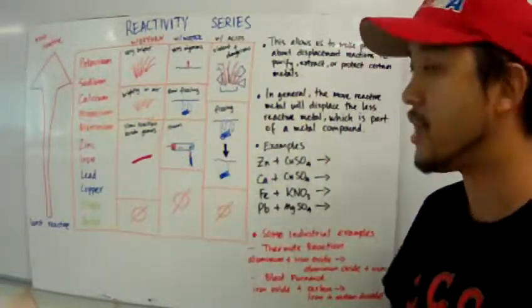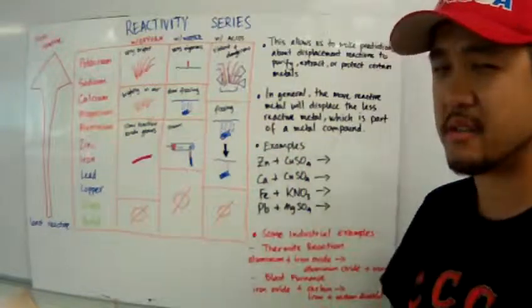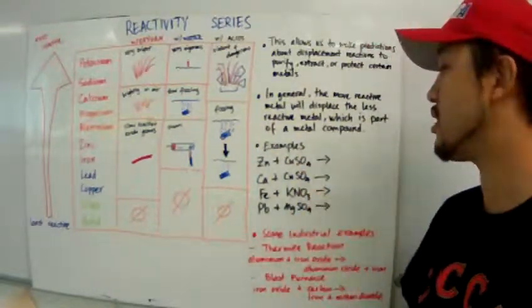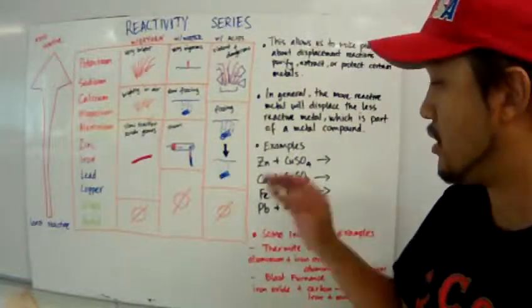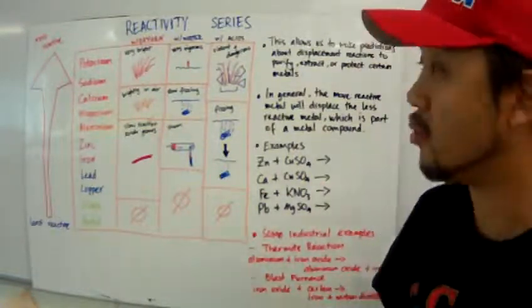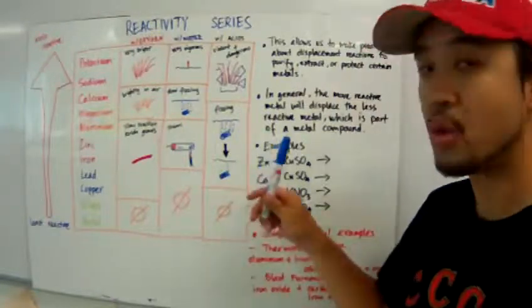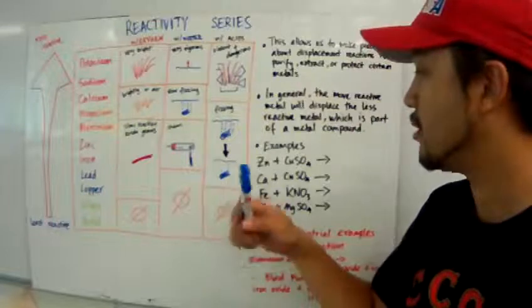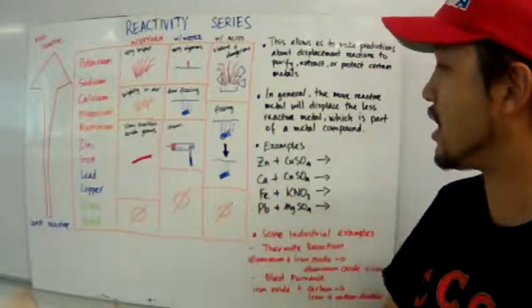So, here I have four examples. And these are examples we're going to see. We should be able to make predictions on whether a reaction will occur or not, on whether a displacement will occur. We have a zinc metal reacting with copper sulfate. So, if you look at zinc,